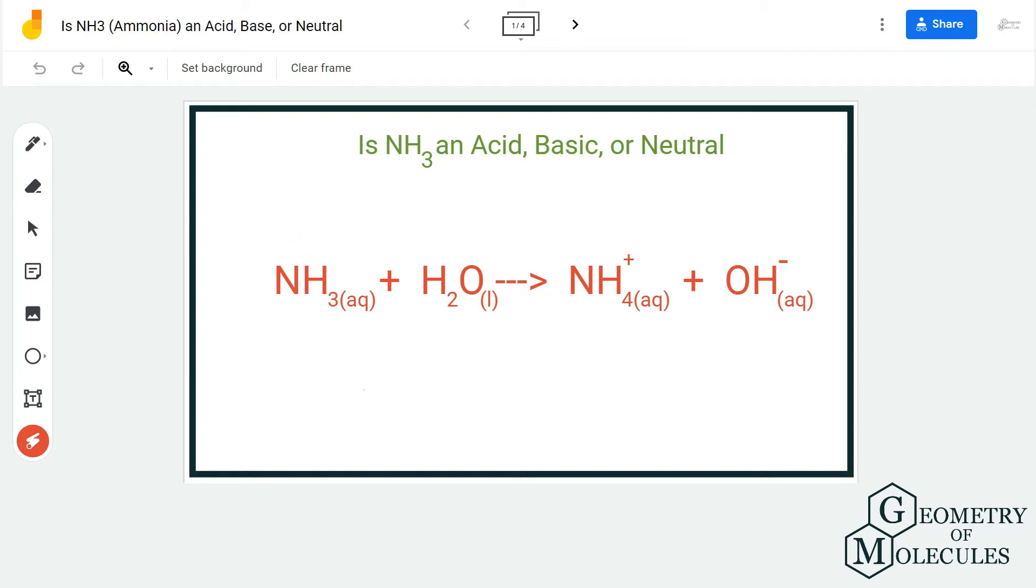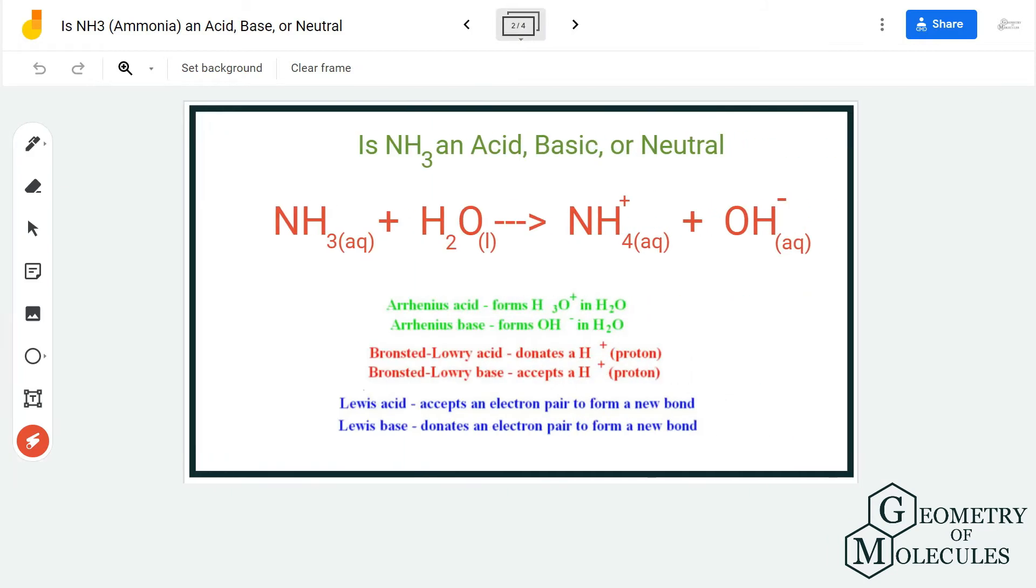When you look at its equation where we have dissolved ammonia in water, you can see it accepts one proton and it now has NH4 plus and OH minus on its product side. Generally, if you are confused what kind of molecule it is, you can always try and see how it reacts with the water molecule.